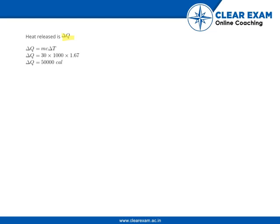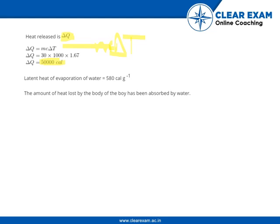The heat released is Q = mcΔT. So the total amount of heat released is 50,000 calories. We know the latent heat of evaporation is 580 calories per gram, and this heat lost by the body has been absorbed by the water.